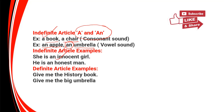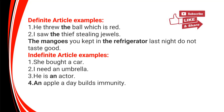Now, definite article examples. As I said, if you are very particular, you will use definite article. 'Give me the history book.' 'Give me the big umbrella.' He threw the ball — a particular ball, which is red. I saw the thief — a particular thief stealing jewels. The mangoes — particular mangoes you kept in the refrigerator last night — do not taste good.